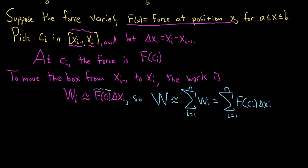So what we do is what we always do in calculus is we take the limit. We let n go to infinity and we get a definite integral. So the work is going to be the limit, as n goes to infinity, of the finite sum, as i runs from one to n, of f of c sub i times delta x sub i.